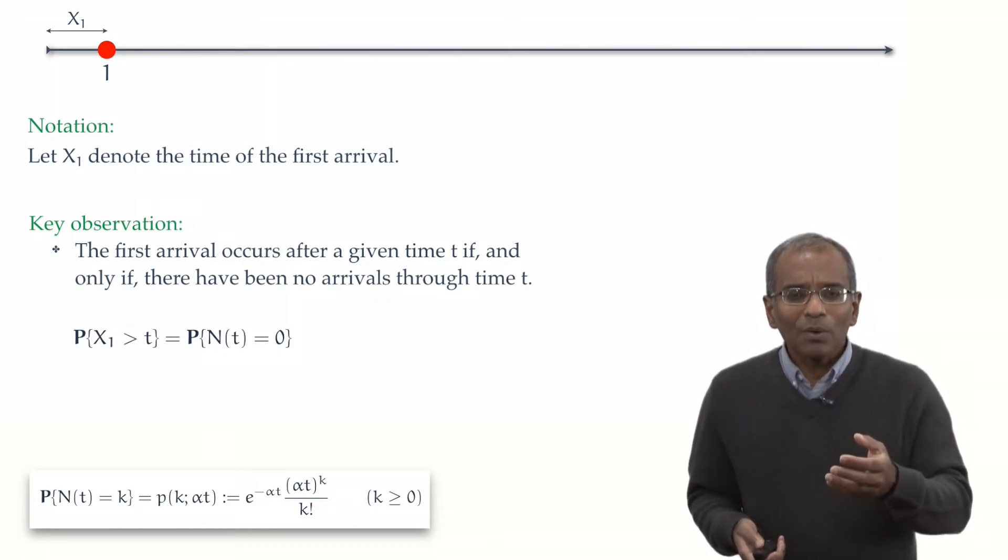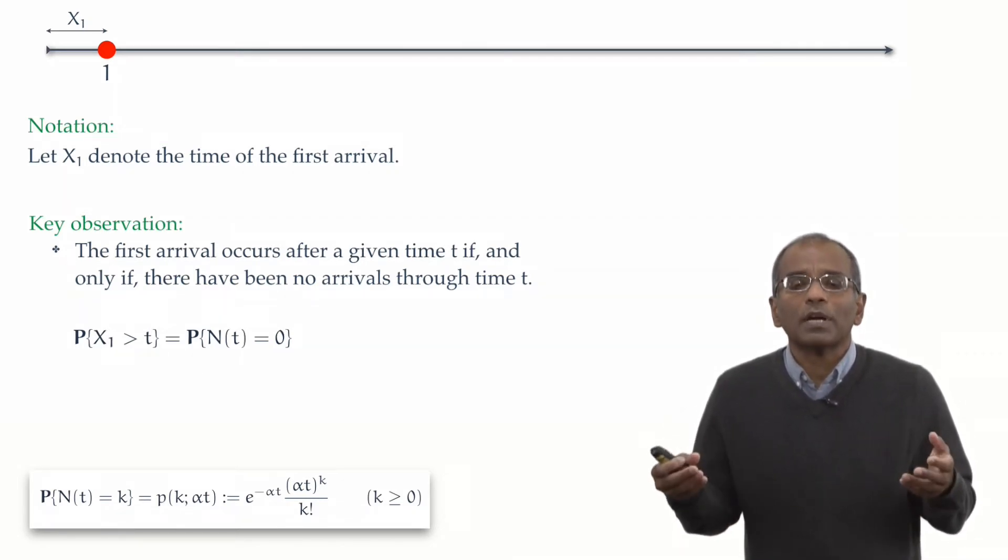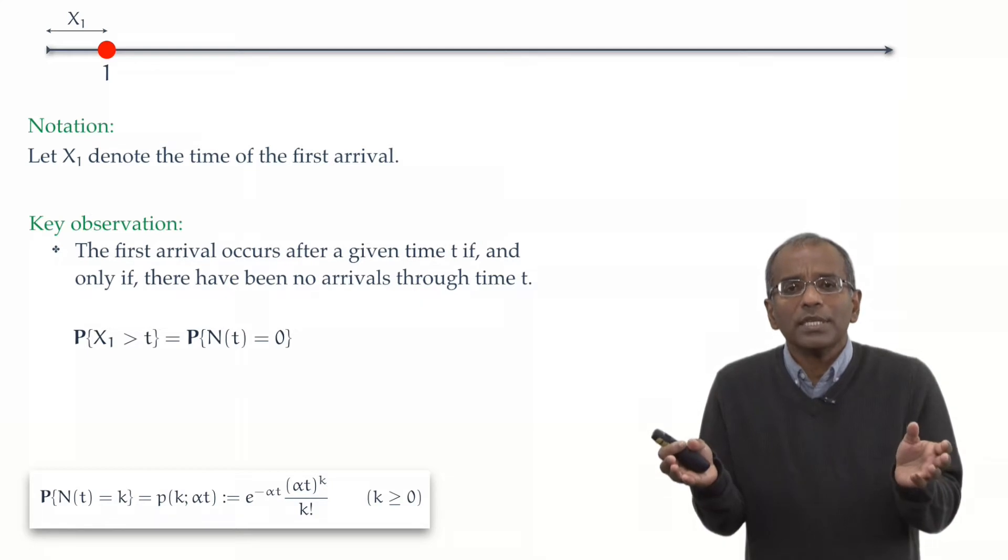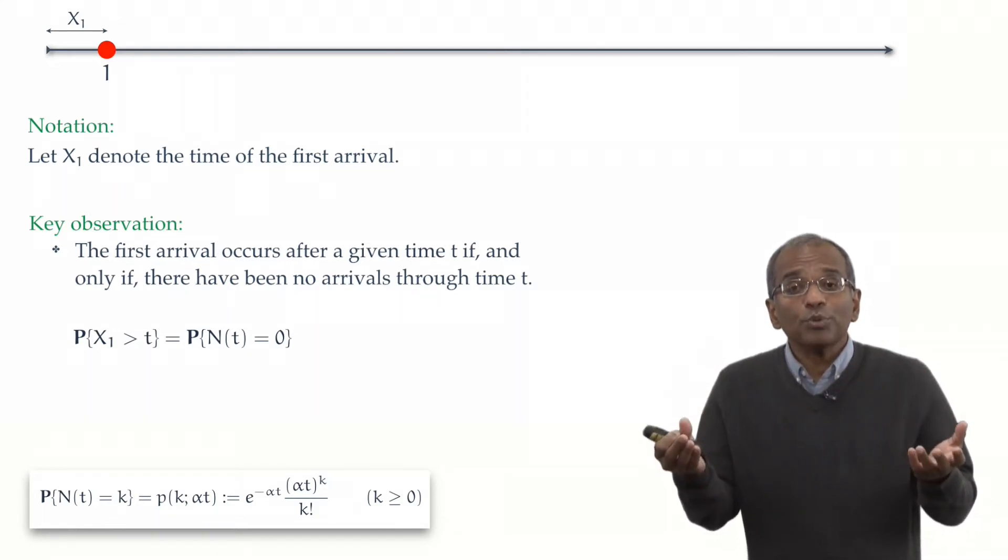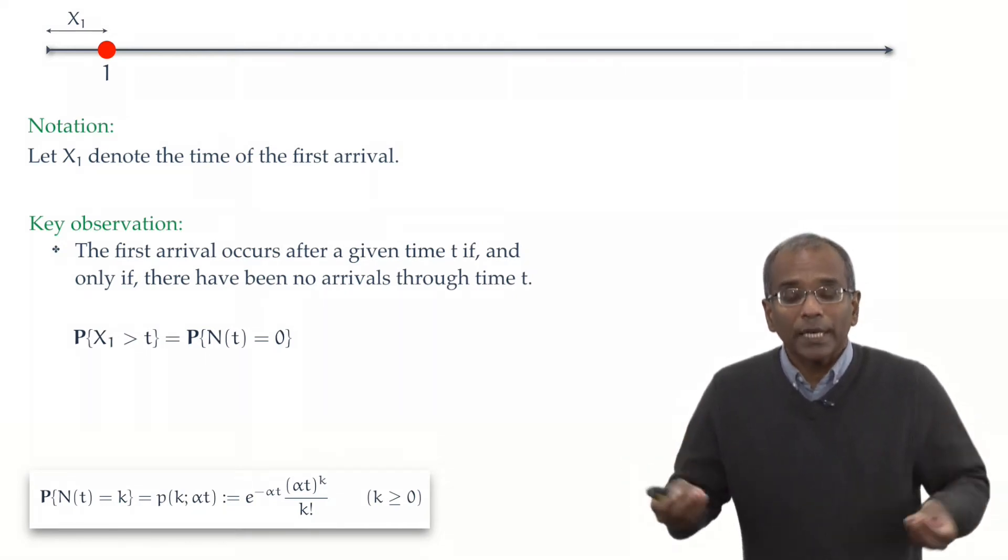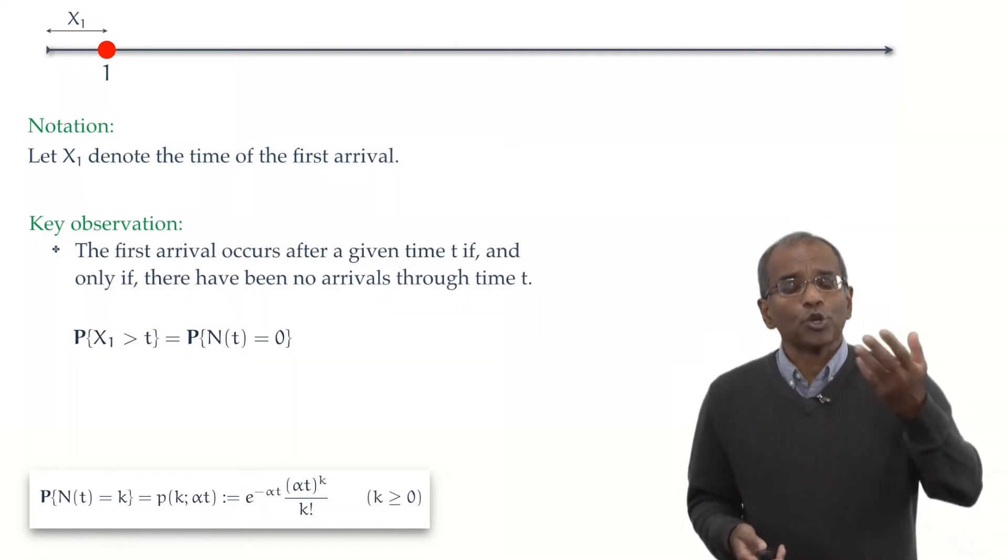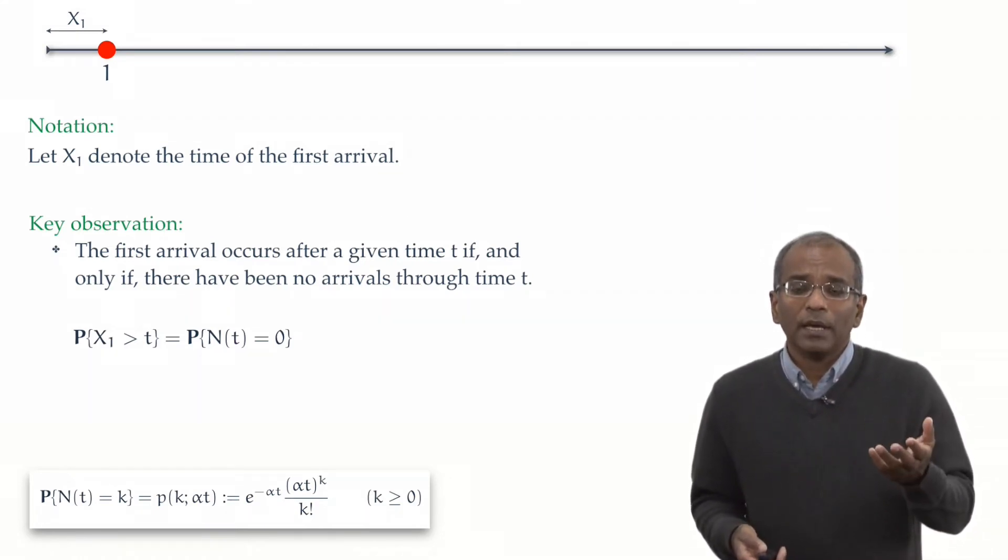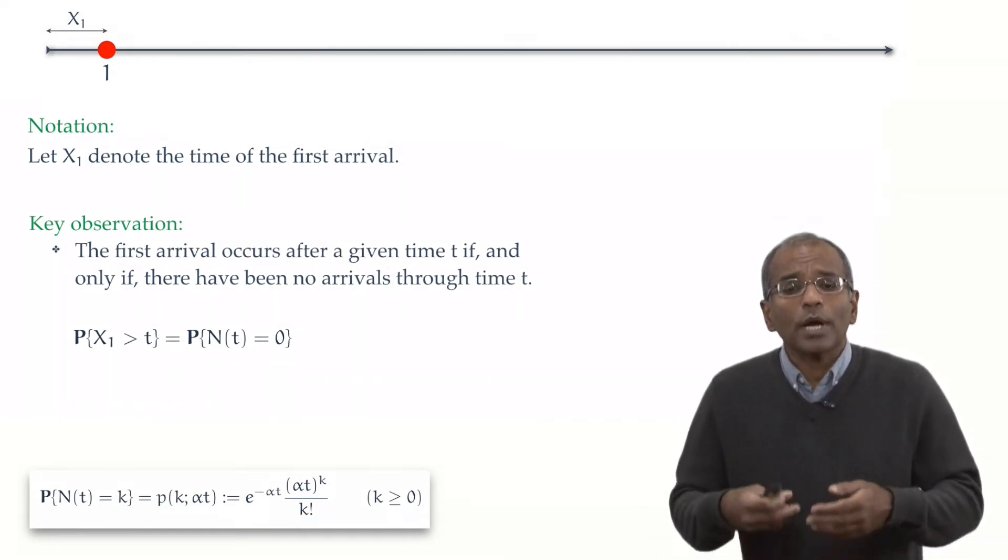But now, we have related the distribution of the first arrival time to the distribution of the number of arrivals. And we know exactly what this is. Therefore, in this case, N(t) is governed by a Poisson distribution with an expected value of alpha t. Therefore, in this case, all we have to do is look up the Poisson probabilities, P(k) with parameter alpha t, put in k equal to 0, and just write down our observation.